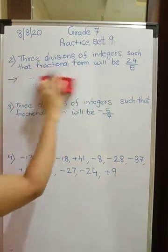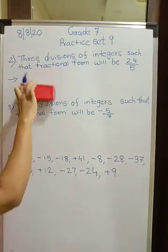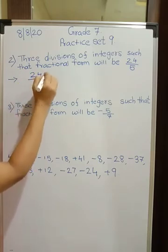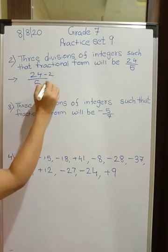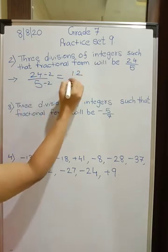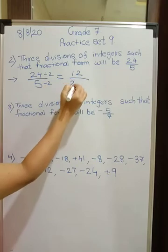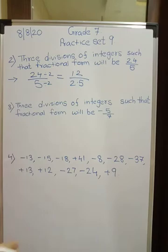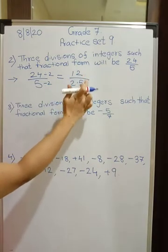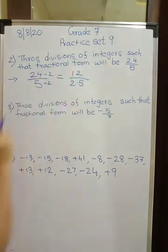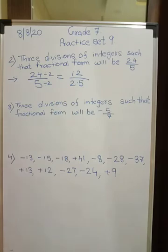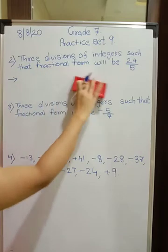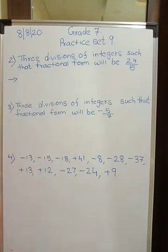It can happen that you are dividing with the same number also, then also you will get the same answer. For example, if I reduce this 24 upon 5, if I divide this by 2 and divide this also by 2, how much I will get? 24 divided by 2 is 12, and 5 divided by 2 is 2.5. So 12 upon 2.5 is same as 24 upon 5. Here now if you multiply both the numbers by 2, you will get back 24 upon 5. So there are many options which are possible.